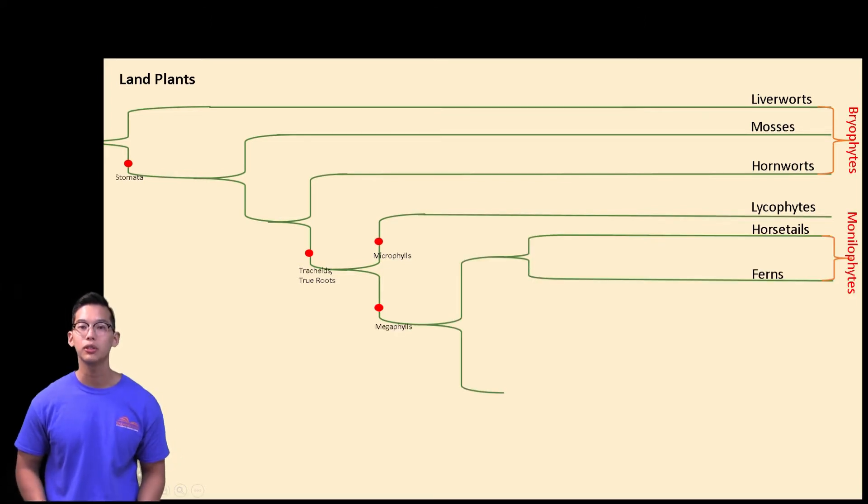Next is our monilophytes, which include our horsetails and our ferns. Their synapomorphies include our megaphylls, which are large, multivascular leaves, leaf gaps in the stem where leaves emerge, and differentiation between the main stem and the side branches.